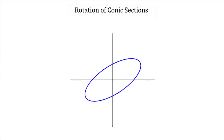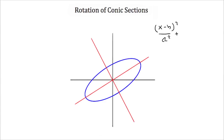Their axis of symmetry looks more like this. Now because this ellipse is rotated, we cannot just look at the standard equation, which would be (x minus h) squared over a squared plus (y minus k) squared over b squared equals 1. A squared and b squared tell us the location of our vertices. Well, because our axes are not in line with the standard x and y axes, this equation no longer fits the description of this ellipse. So finding these vertices and finding the foci for this ellipse becomes a lot more difficult.